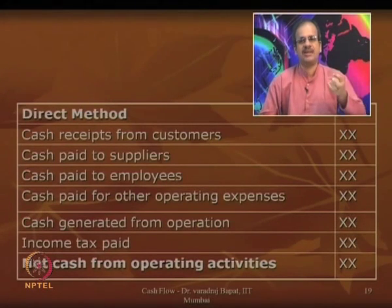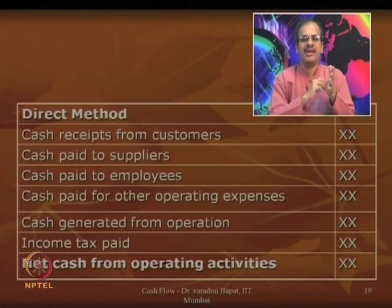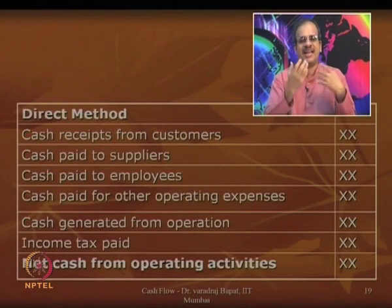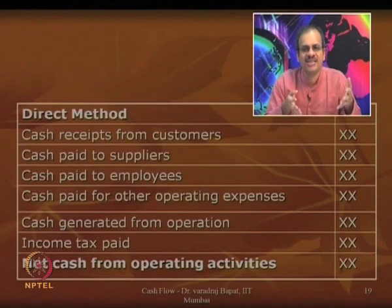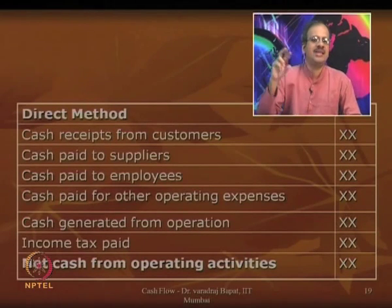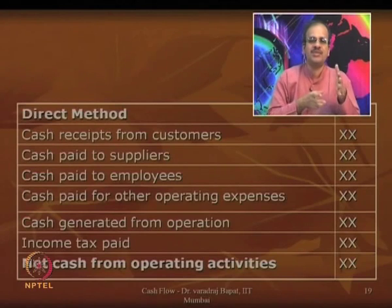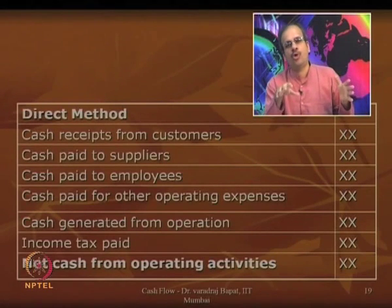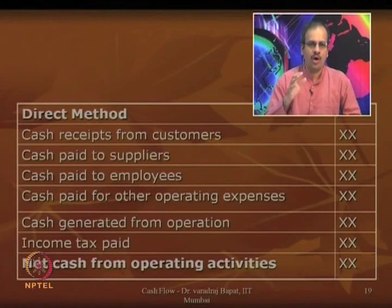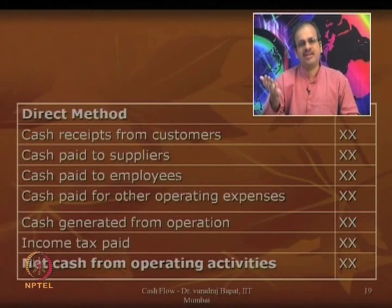The total of all these items gives the net cash from operating activities. This is one way of disclosing cash flows from operating activities. There is another method known as the indirect method. The deficiency of the direct method is that it is very close to what is shown in the P&L account — sales, purchases, salary, electricity, bonus, license fees, royalties — all those items would be repeated again in the cash flow statement. This duplication is not desirable, which is why the indirect method was introduced.